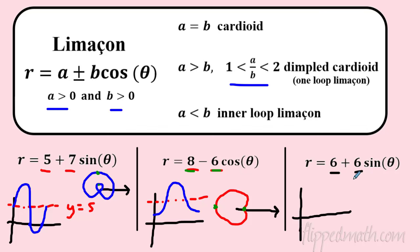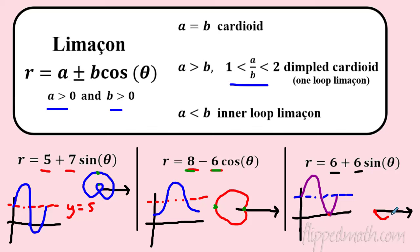For 6 + 6sin(θ): a equals b equals 6, so it's a cardioid — everyone's favorite heart shape. Rectangular sketch: midline at 6, sine curve with amplitude 6, just touches the x-axis once. It's positive sine, so it opens upward, starting at the origin. Maximum distance is 6 + 6 = 12.